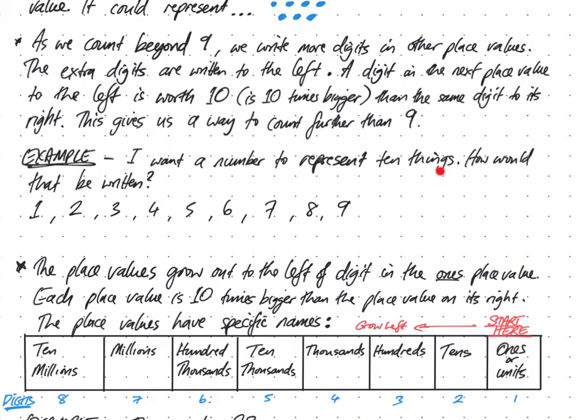As an example, I want a number to represent 10 things. 10 is just one more than 9. There's no special symbol to represent 10 with one digit. So we're going to use this idea of place value, using the combination of symbols 0 to 9 to represent 10 things. How would that be written? I'm going to start by counting from 1 to 9, then show you how we increase our ability to count by writing more digits.